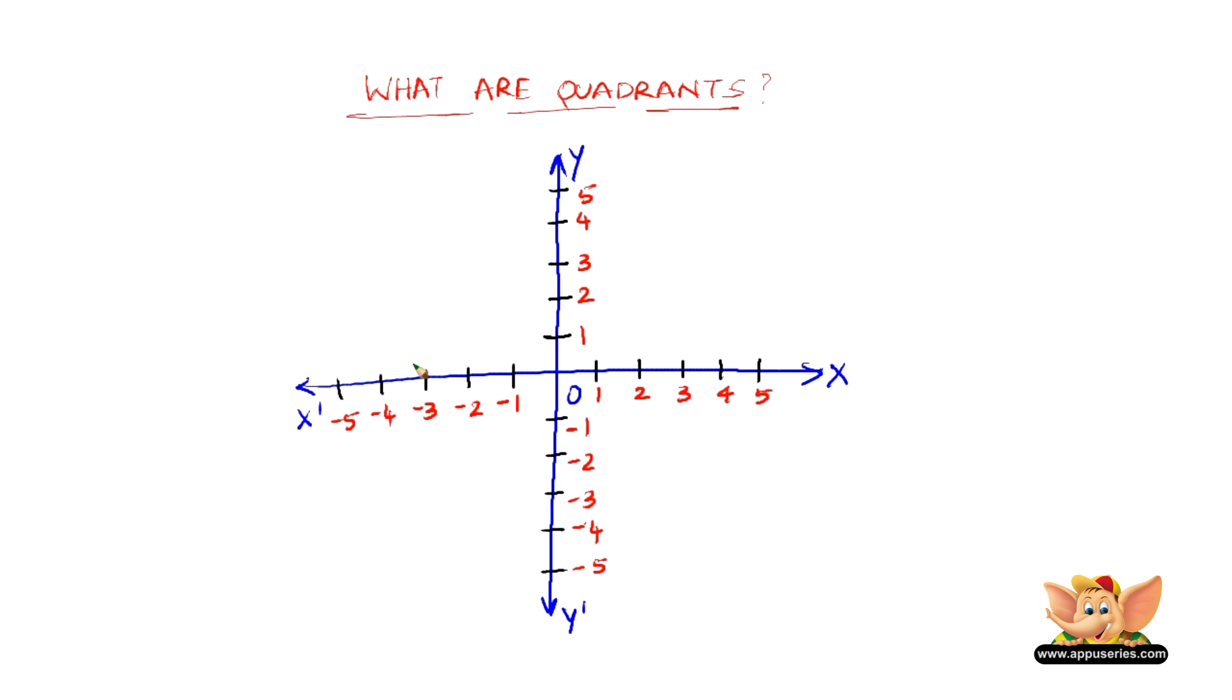Considering the lines x o x dash or x dash o x and y o y dash or y dash o y, what these lines do is divide the whole plane on which the Cartesian coordinate axis lines lie into four parts.